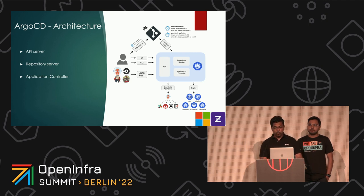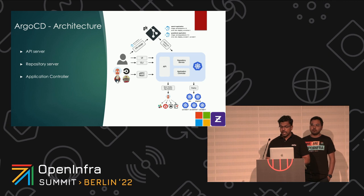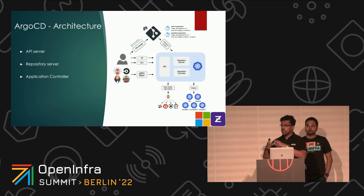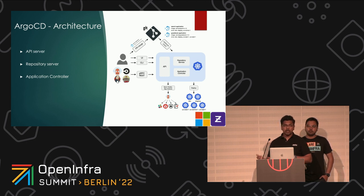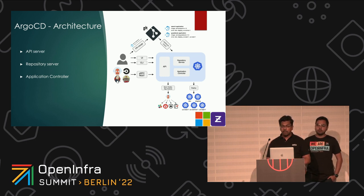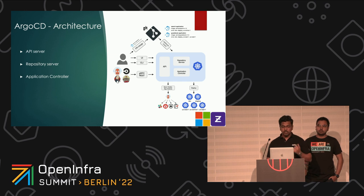The repository server is an internal service that maintains a local cache of the Git repository and holds the application manifests. It is responsible for generating and returning Kubernetes manifests when given inputs such as the repository URL, revisions, application path, and template-specific settings like parameters, environment variables, or Helm values.yaml.